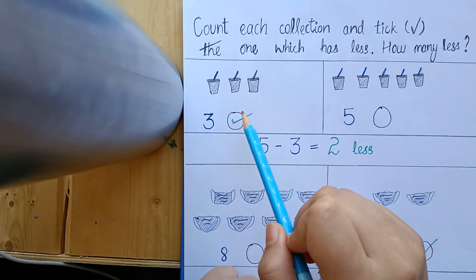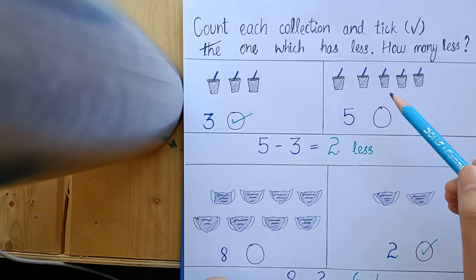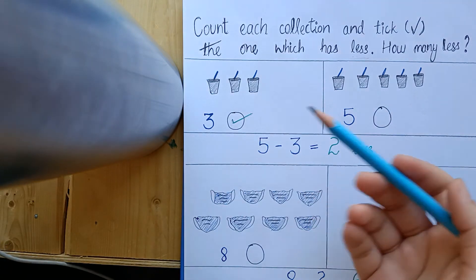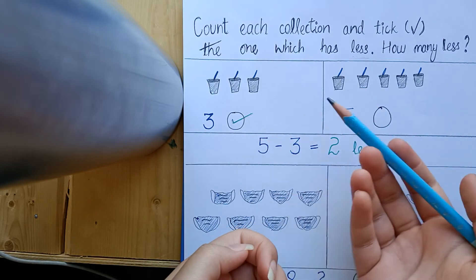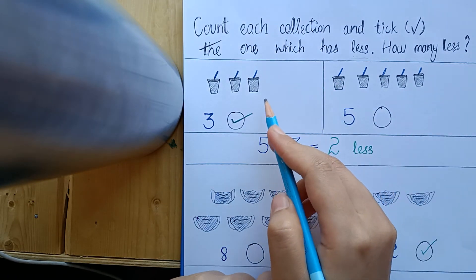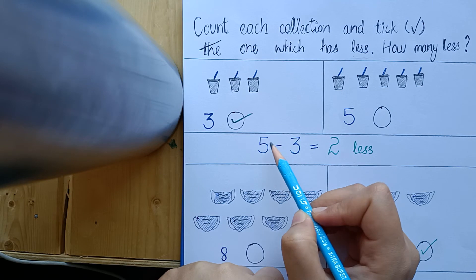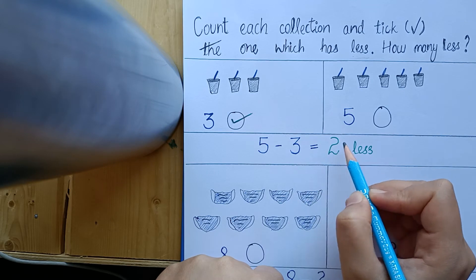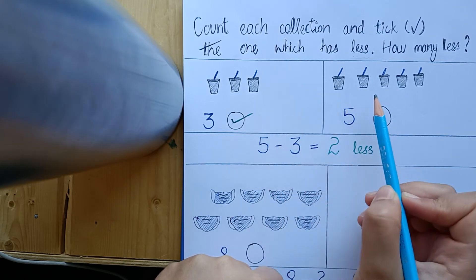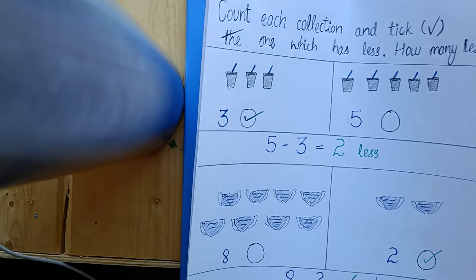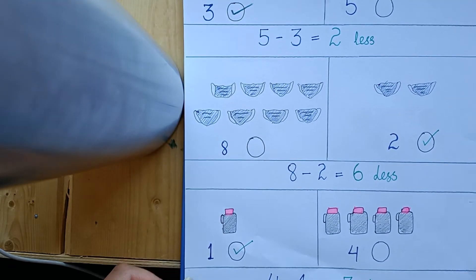One, two, three — here we have three glasses in this collection. One, two, three, four, five — in this collection we have five glasses. So we have to click on it. Five minus three — bigger number minus smaller number — five minus three equals two. So in this collection two glasses are less as compared to this collection. Two less.